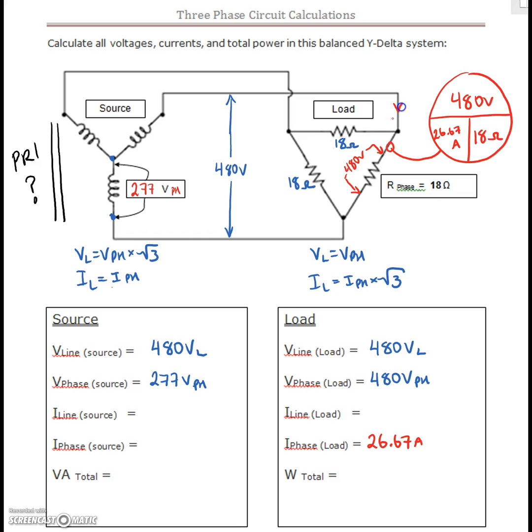When that current comes into the delta, it takes two paths. It doesn't take them at the same time, they go 120 degrees out of phase, but we can see that the current disperses along these two lines here. So this line current on the outside of the delta has got to be greater. For our line current, we're going to take 26.67 amps and multiply that by root 3.